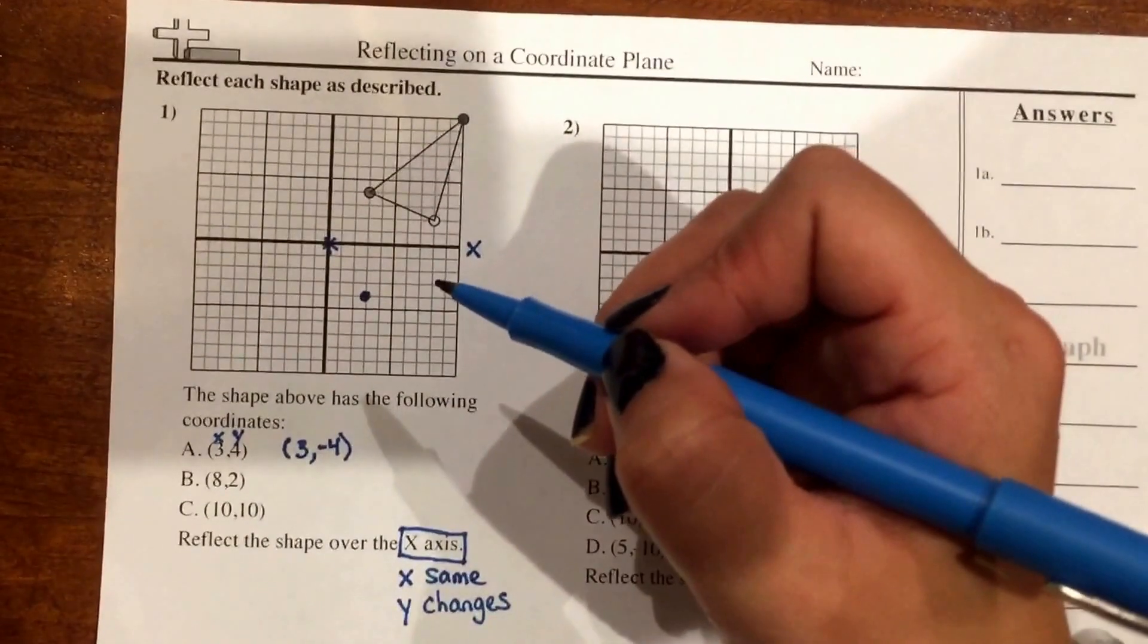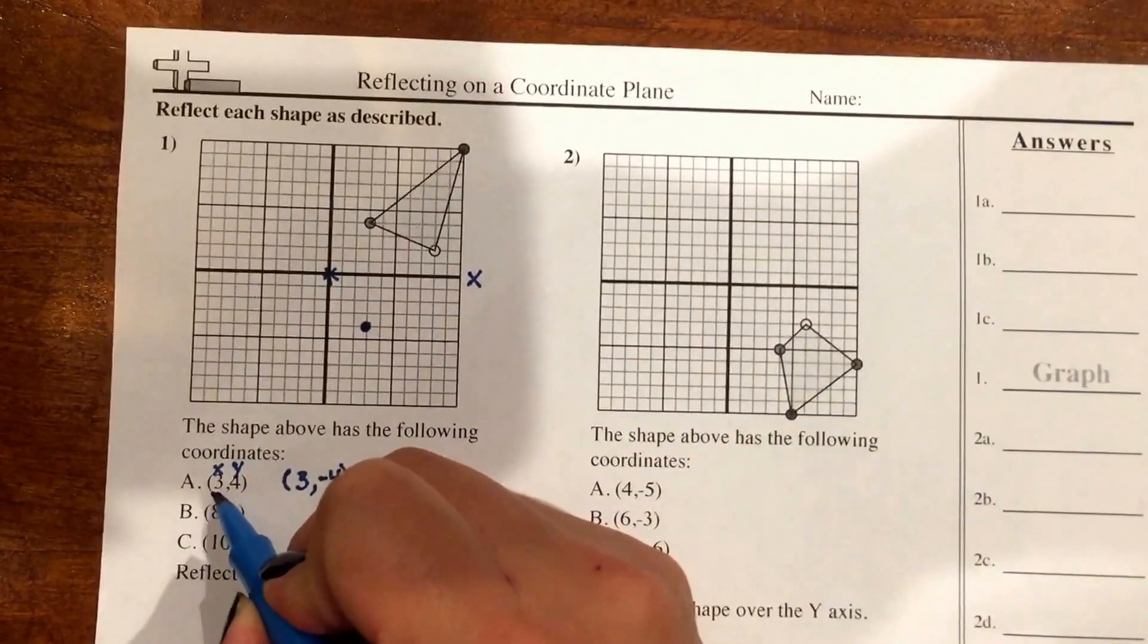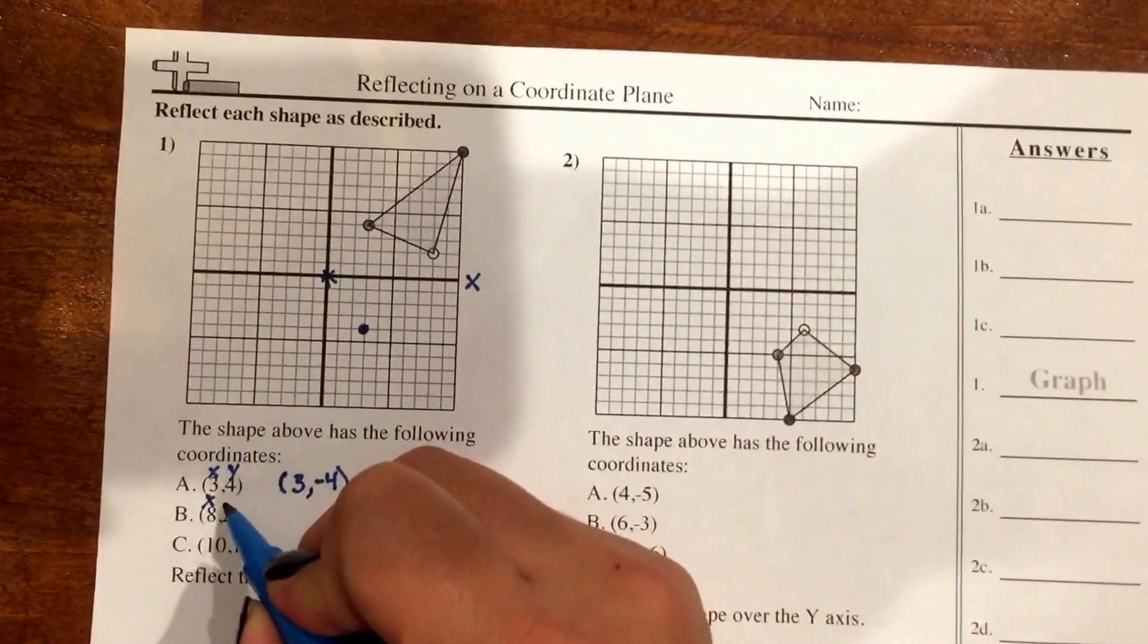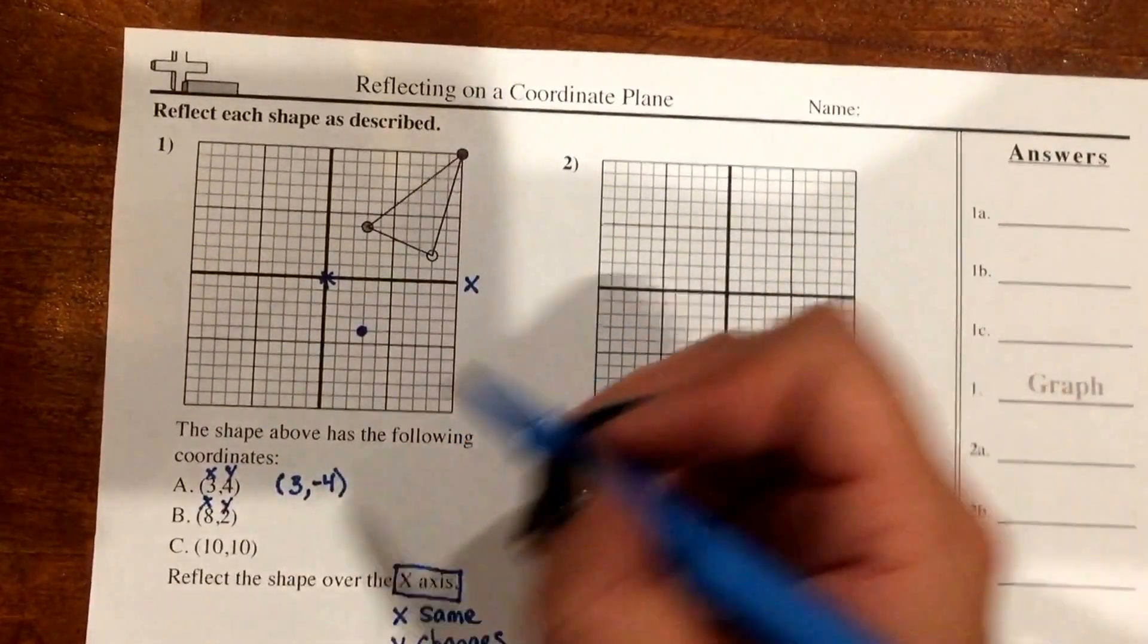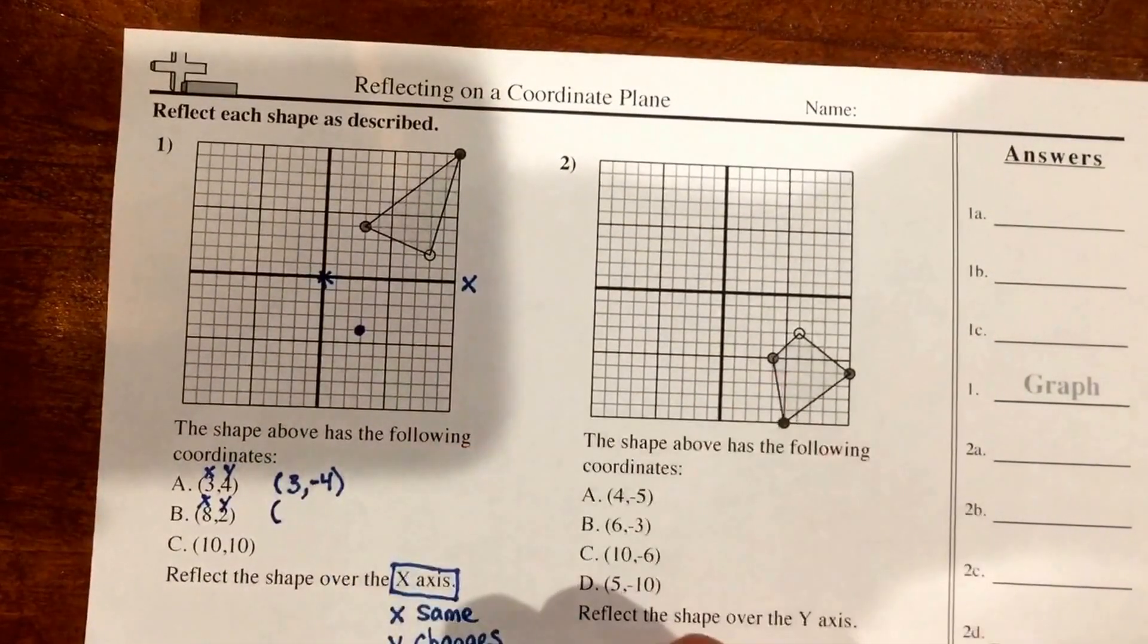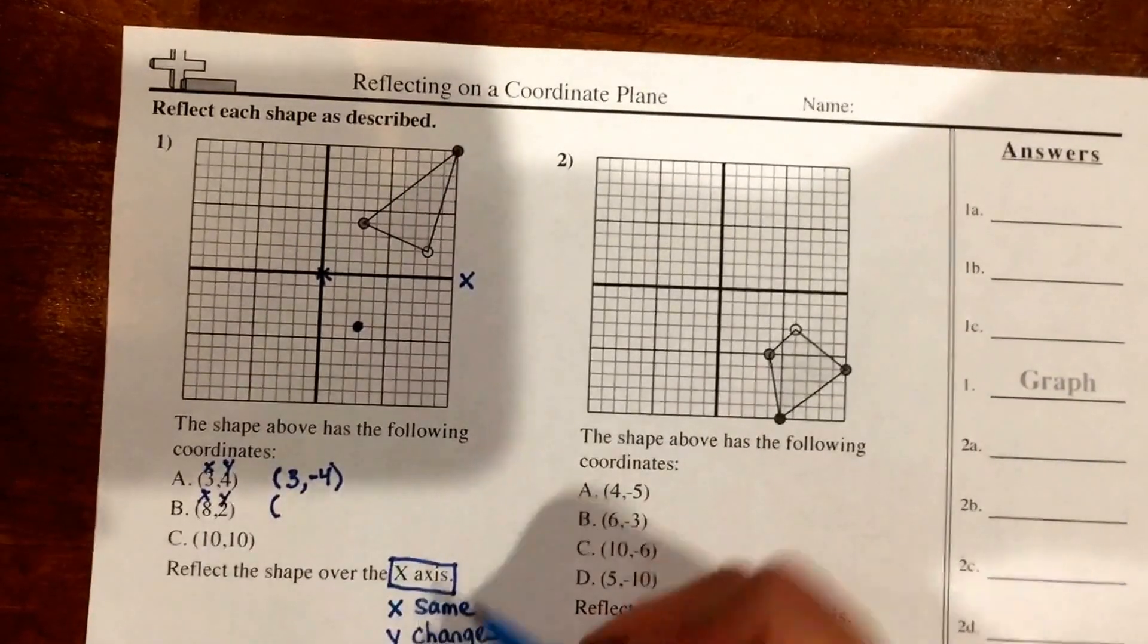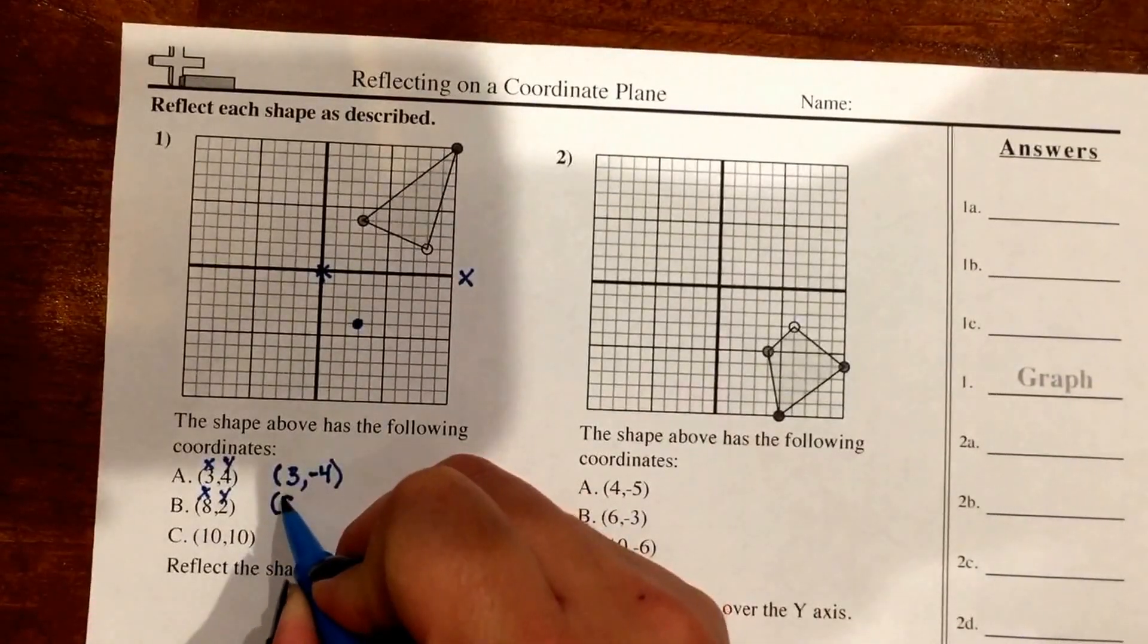All right, so let's take a look at point B. I know my 8 is going to be my x-coordinate, and my 2 is going to be my y-coordinate. So if I reflect my point over the x-axis, my x is going to stay the same, which is 8.